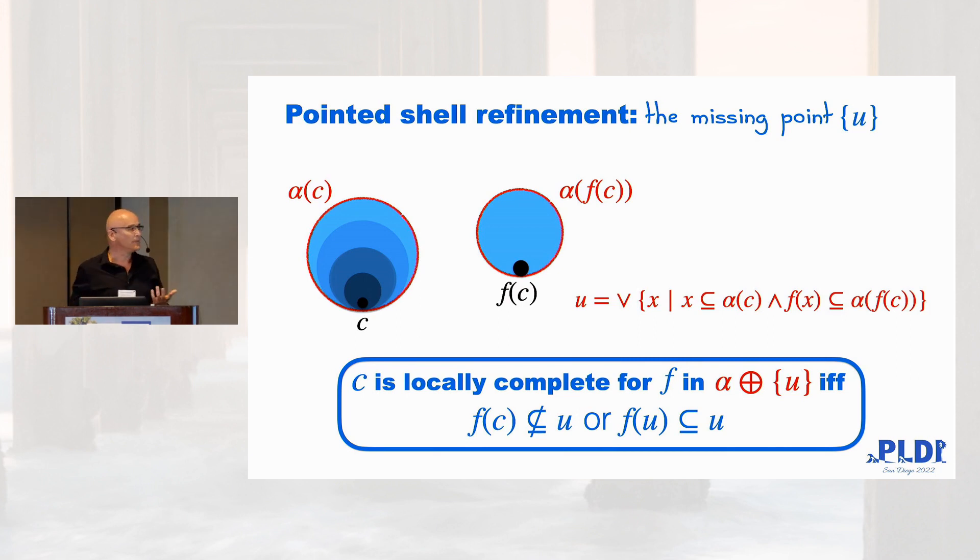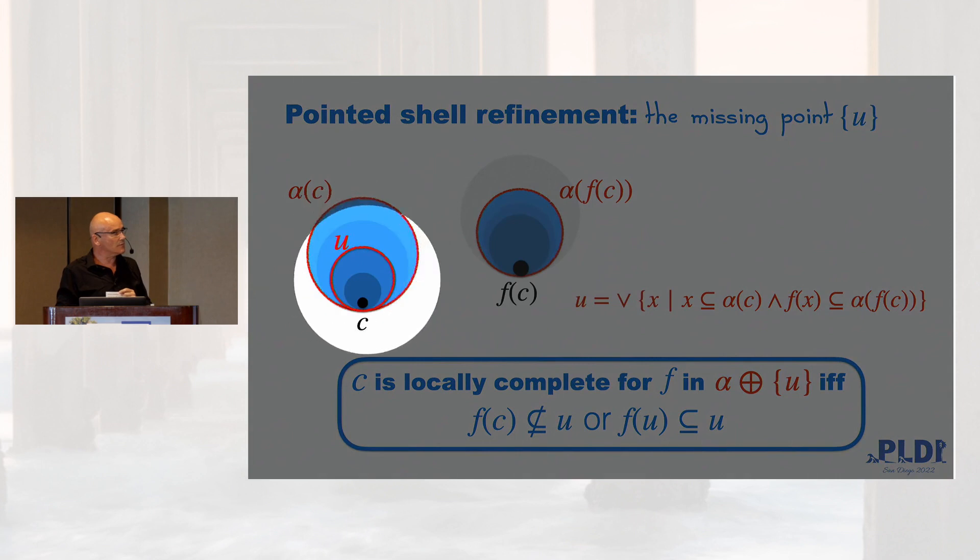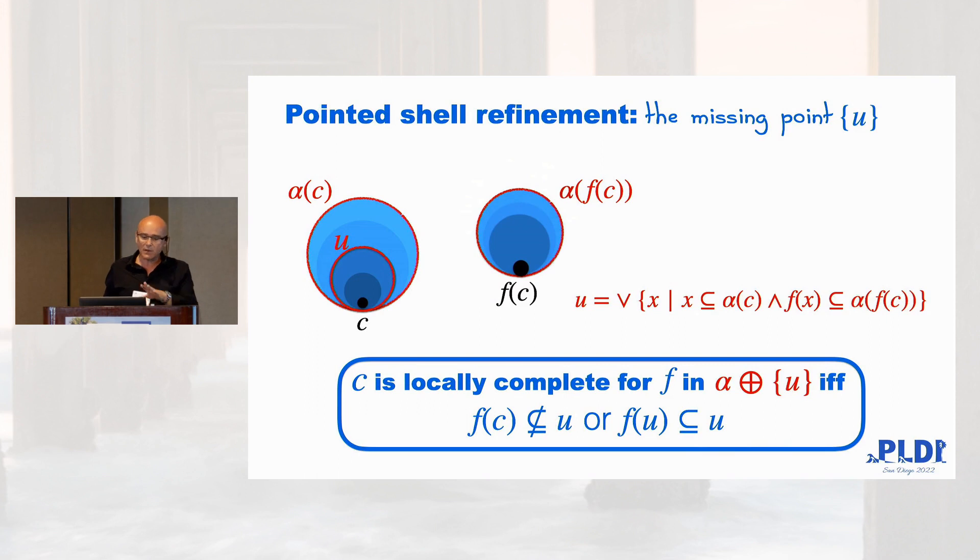Then the point that we need to add is that formula that says basically that I need to find the largest element such that that condition is satisfied. What does it mean? Imagine that this point is inside. That belongs to the set. Imagine that point is inside. That belongs to the set. This is not. This is outside. That means that what I need to add is exactly the maximum element that produces something inside that set. And we have a pretty nice if-and-only-if condition that guarantees that if we have that point we have the best possible most abstract optimal refinement for that point.